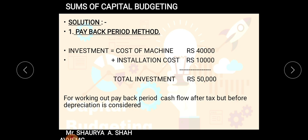The sum again had the cost of machine and installation cost of ten thousand, from which we calculated the total investment. We covered this in the last lecture. The total investment calculated was fifty thousand rupees. For working out the payback period, cash flow after tax but before depreciation is considered.